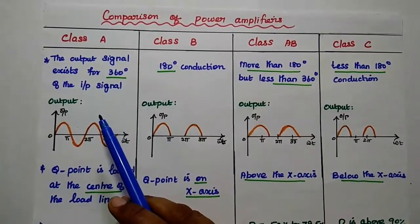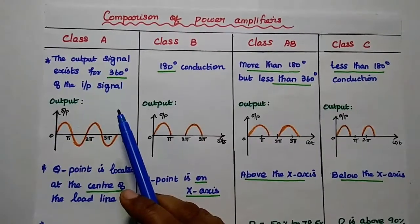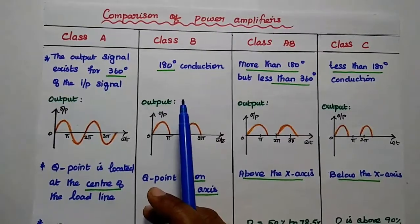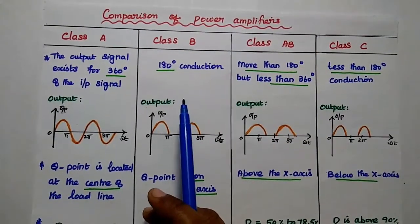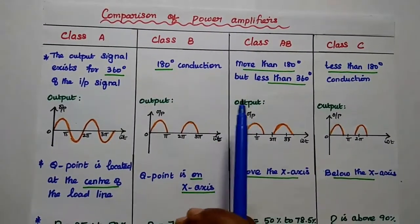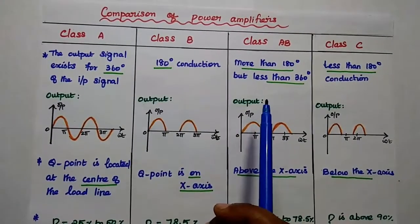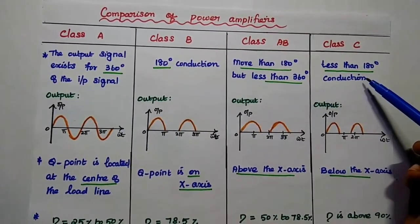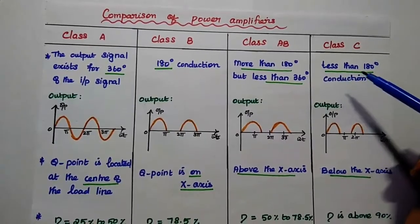In class A amplifier, the output signal exists for 360 degrees of the input signal. For class B, the transistor can conduct only for half of the input signal, that is 180 degrees. For class AB, the transistor is in the active region for more than 180 degrees but less than 360 degrees. For class C, it can produce the output for less than 180 degrees.